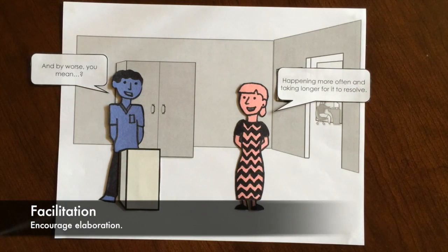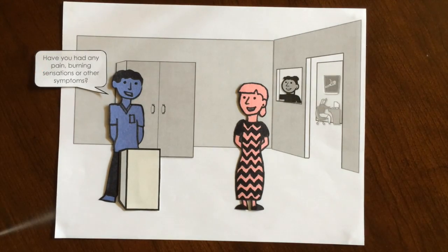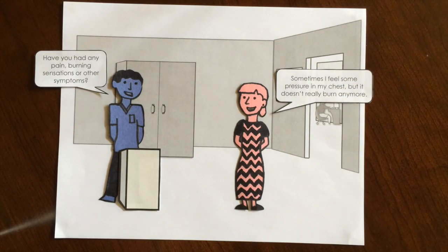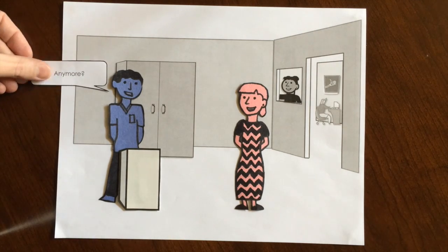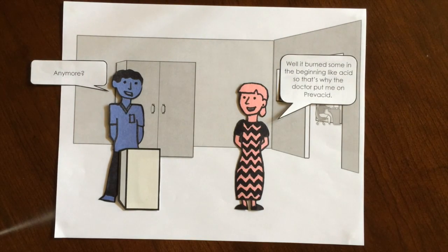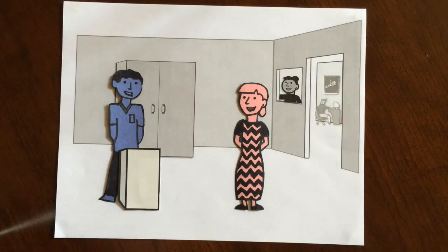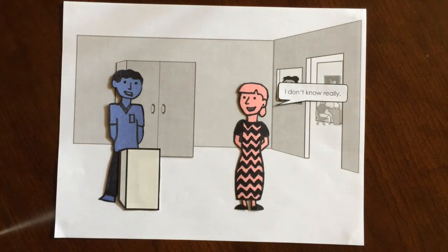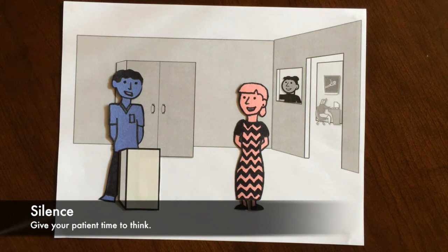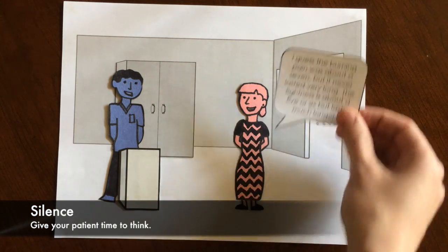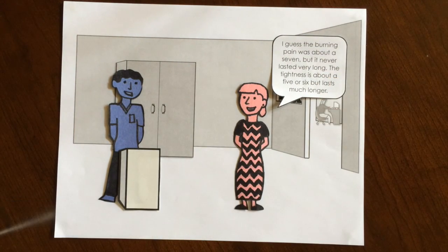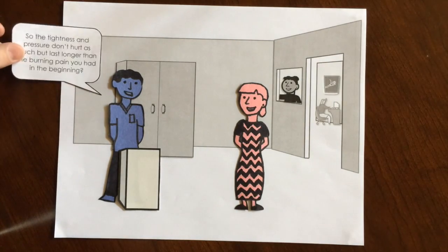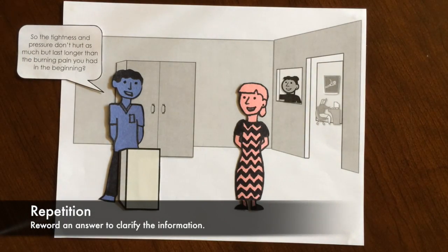Facilitating questions encourage the patient to elaborate. Sam continues to use a combination of probing and facilitating questions in order to make sure that he has identified all of the sacred seven elements of a clinical history. Sam even uses silence in order to give his patient time to think. Rewording or repeating a patient's answer allows for clarification of the information.